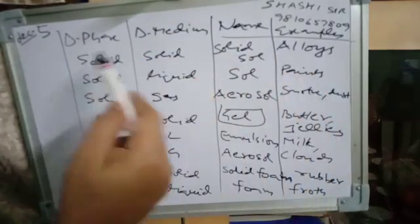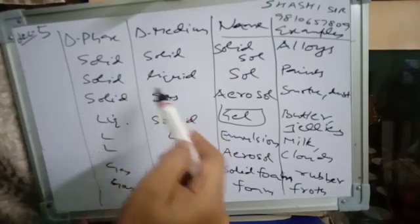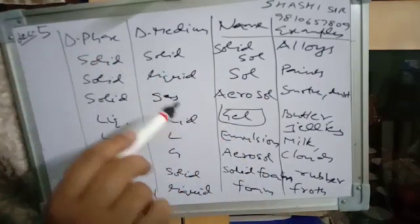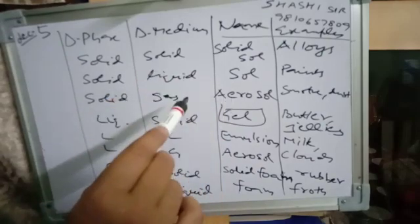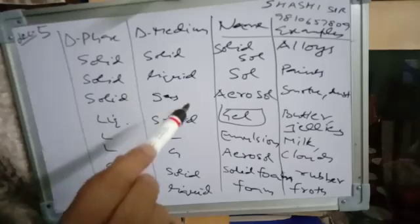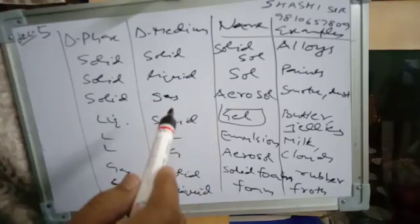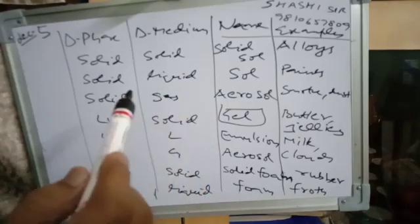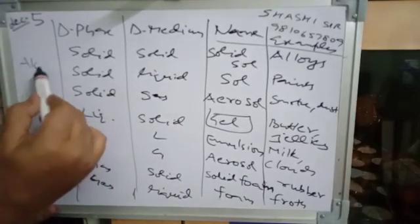Depending on the disperse medium, colloidal sols have special names: if the disperse medium is water it is called hydrosol or aquasol, if benzene it is called benzosol, and if alcohol it is called alcosol.